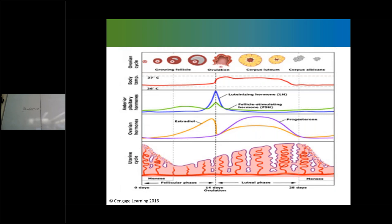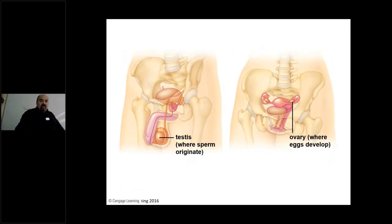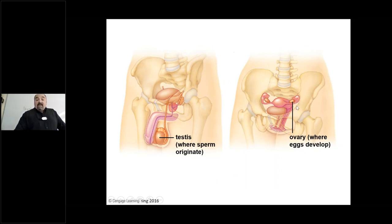Here you're seeing an image of the testes, which are the gonads. The gonads for the female are the ovaries, about the size of an almond. The testes produce the gametes — the sperm — and the ovaries produce the gametes — the egg.